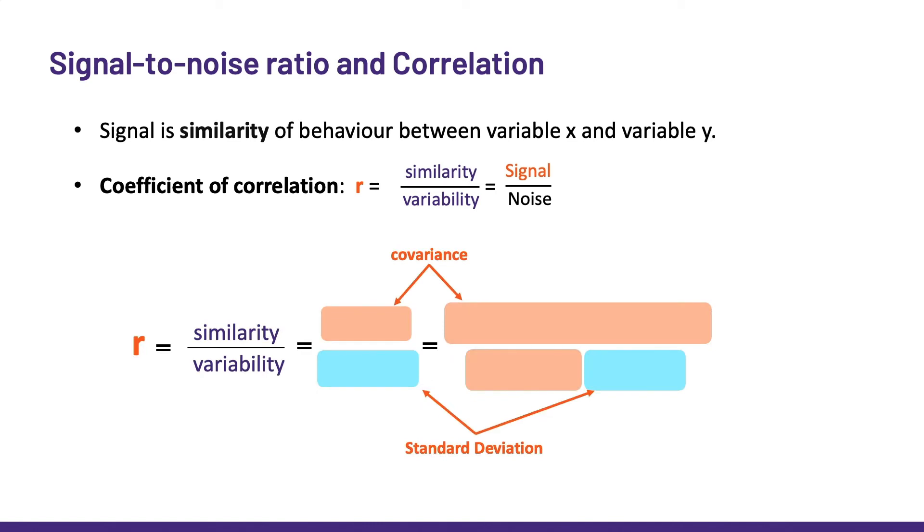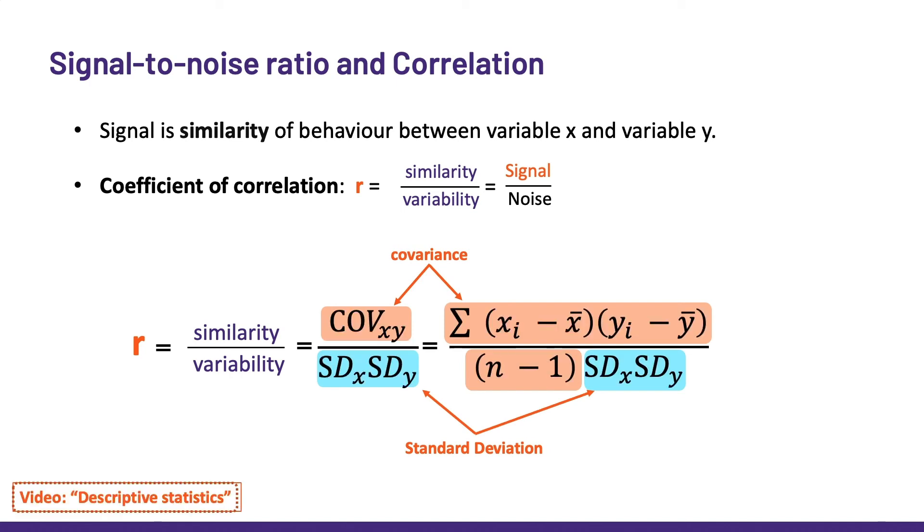So, math-wise, we have the covariance at the numerator, so how the variables vary together, and the variability at the denominator, namely the standard deviation of both x and y. If you want to learn more about variance and standard deviation, check out the video on descriptive statistics.